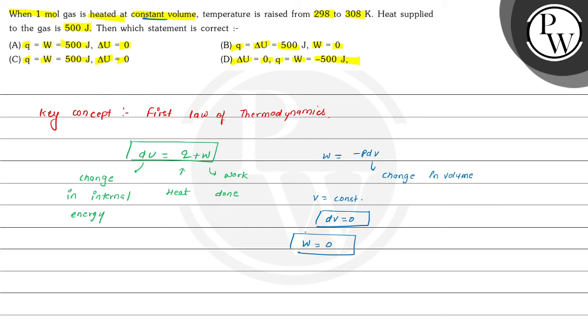If this work done equals 0, then we can write internal energy equals heat. In this question, it is given that heat supplied equals 500 Joule. So ΔU equals Q equals 500 Joule.